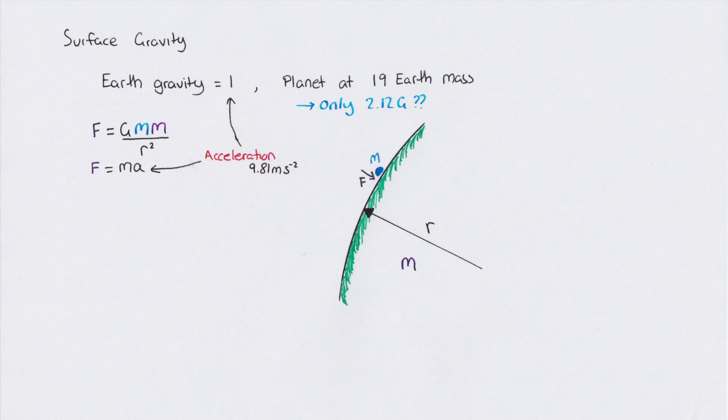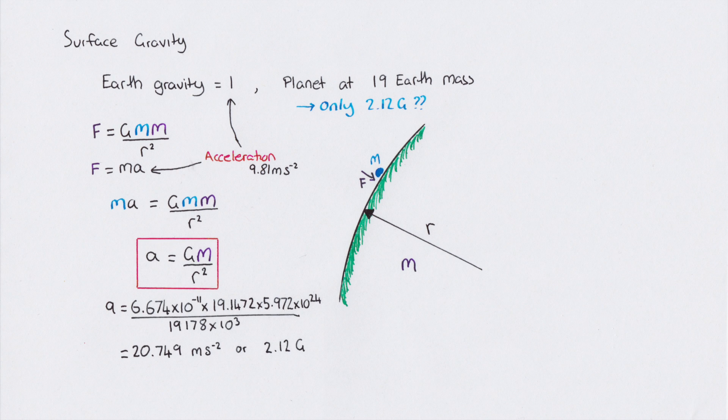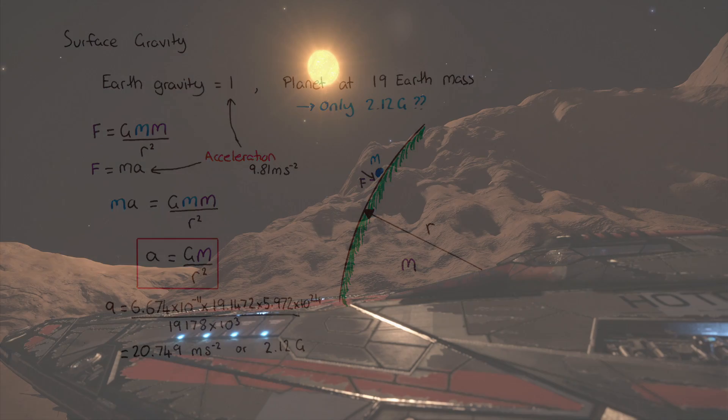We tackle this by considering the equation for the test mass sat on the surface of a larger spherical mass. We bring in our gravitational force equation, and Newton's second law of motion, that the force is equal to the mass times the acceleration. Now, if we equate these two, you'll end up with the acceleration on one side, and G M over r squared on the other. Acceleration here is actually g, or the acceleration due to gravity. Now you see the reason why the planet has only got 2g, because of its enormous radius.